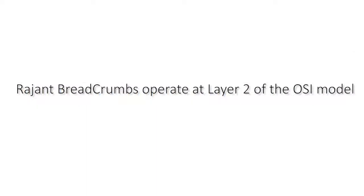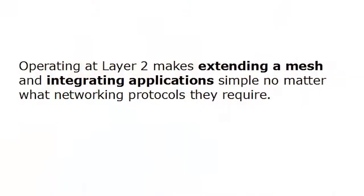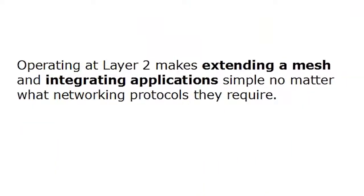Breadcrumbs operate at layer two of the network model, and what this means is that you can consider the entire set of breadcrumbs in a mesh as one big virtual Ethernet switch. You can use breadcrumbs to bridge into vehicle or equipment networks, you can use them to bridge into other networks, you can use them to connect to other breadcrumbs. And because we operate at layer two, it makes integrating with other equipment trivially easy.